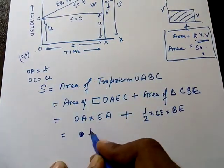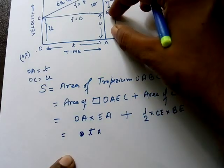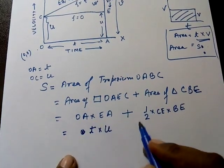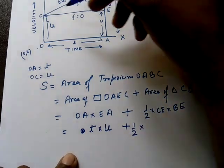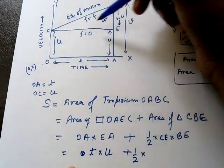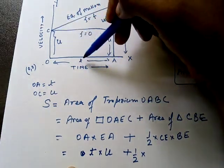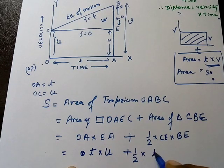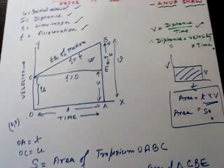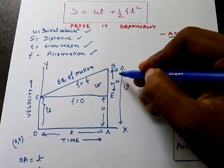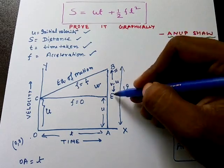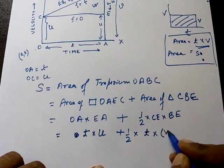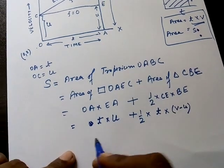So the area of the rectangle is u times t, which gives ut. Now the area of triangle CBE equals half times base times height. The base CE equals OA equals t, and the height BE equals v minus u. So the area of the triangle is ½ × t × (v − u).